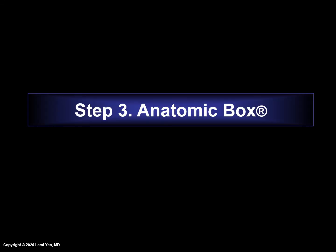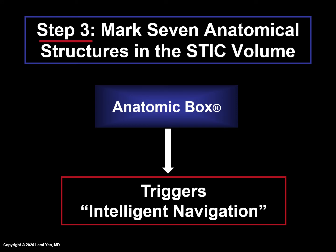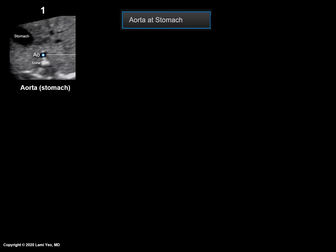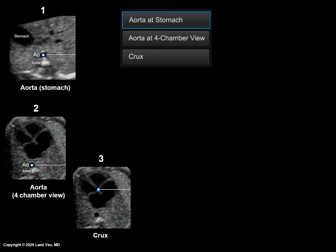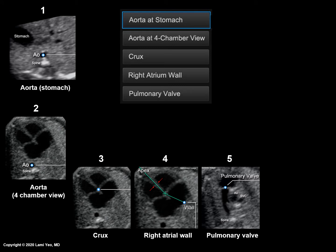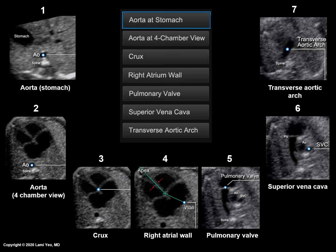The next step is Anatomic Box. Using this tool, the user marks or clicks on seven anatomical structures within the STIC volume, and once marking is completed, this triggers Intelligent Navigation Technology. FINE shows the user the seven cardiac structures that need to be marked and in what specific order. These are the aorta at the level of the stomach, the aorta at the level of the four-chamber view, crux, right atrial wall, pulmonary valve, superior vena cava, and finally the transverse aortic arch.